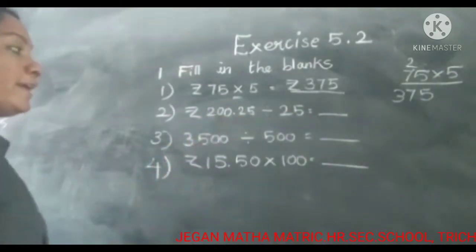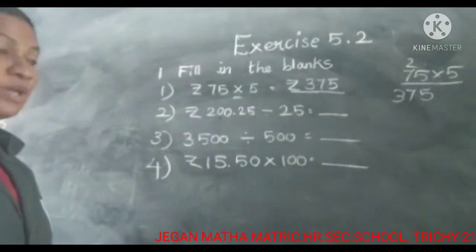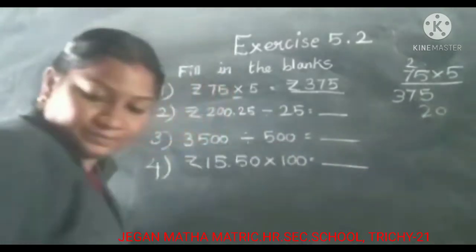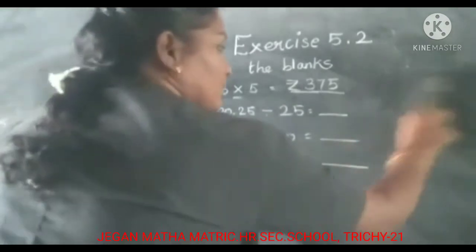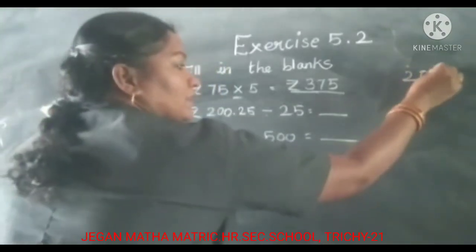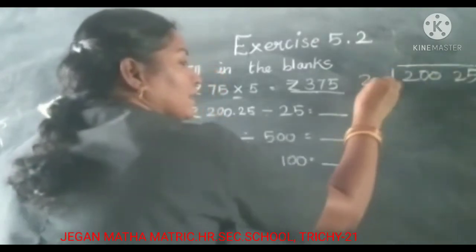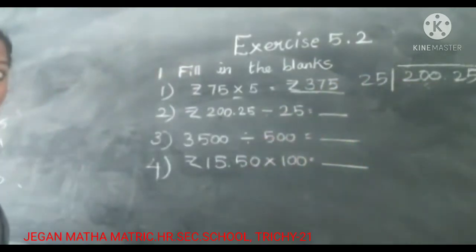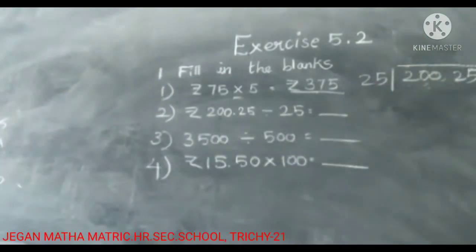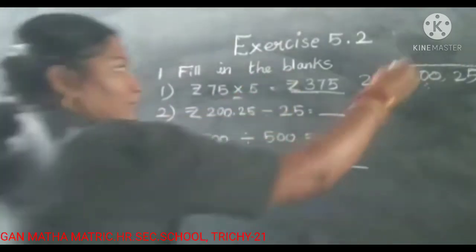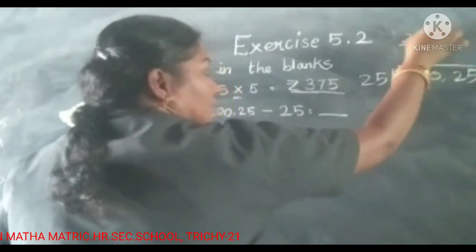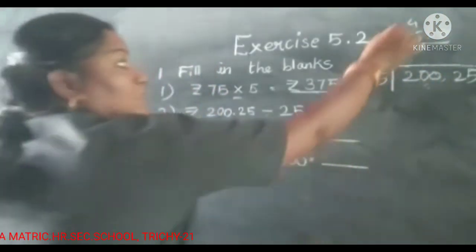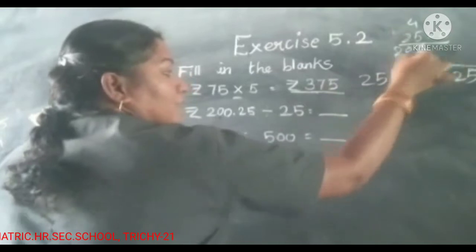Next one, 200.25 divided by 25. First let's check the 2 digit numbers. 20 compared to 25, it is a lesser number. Take the nearest number also to 200. So 25 multiple 8. 5 eights are 40, 0 and 4. 2 eights are 16, 16 plus 4, 20. So 8, 20, two hundred.